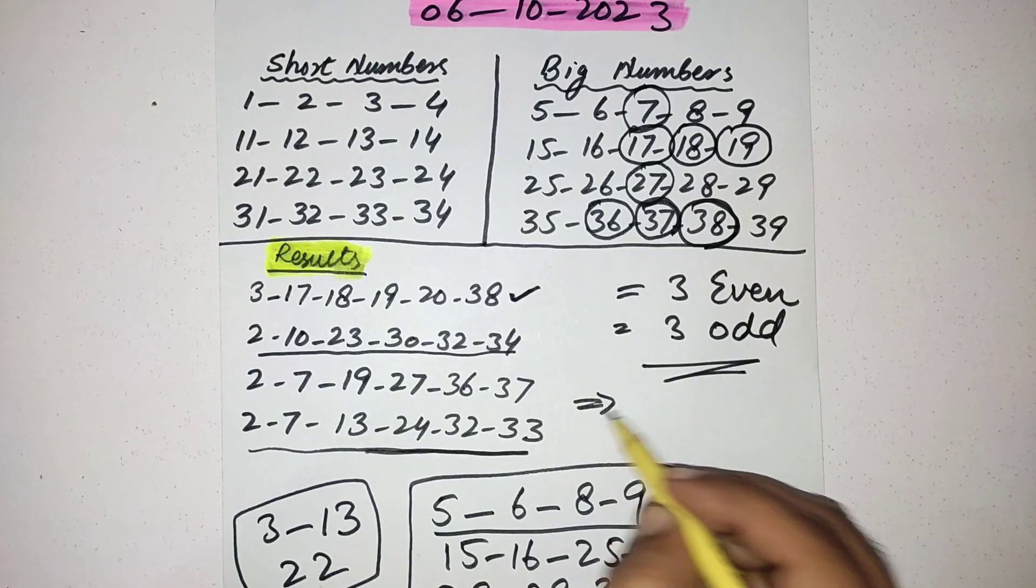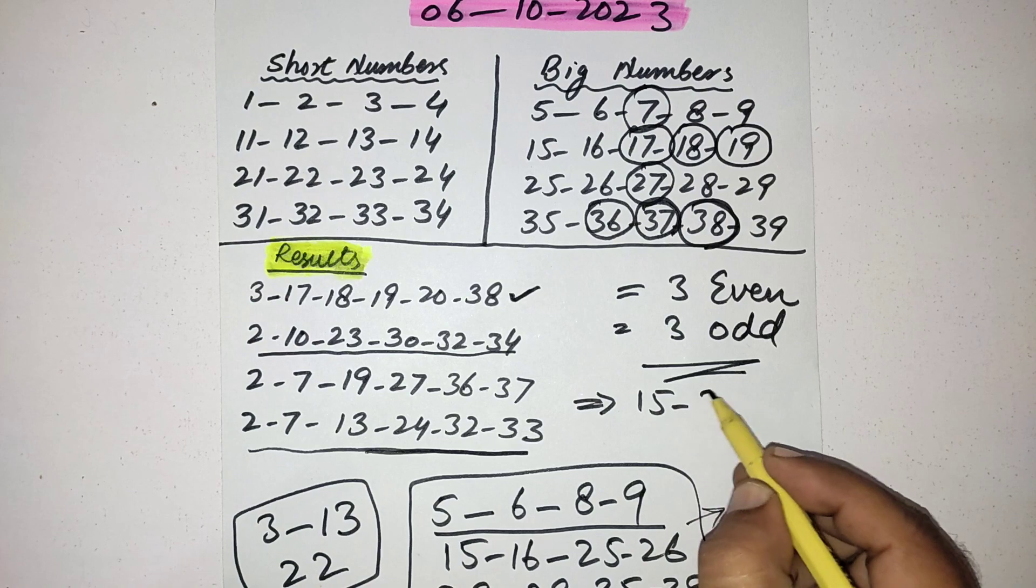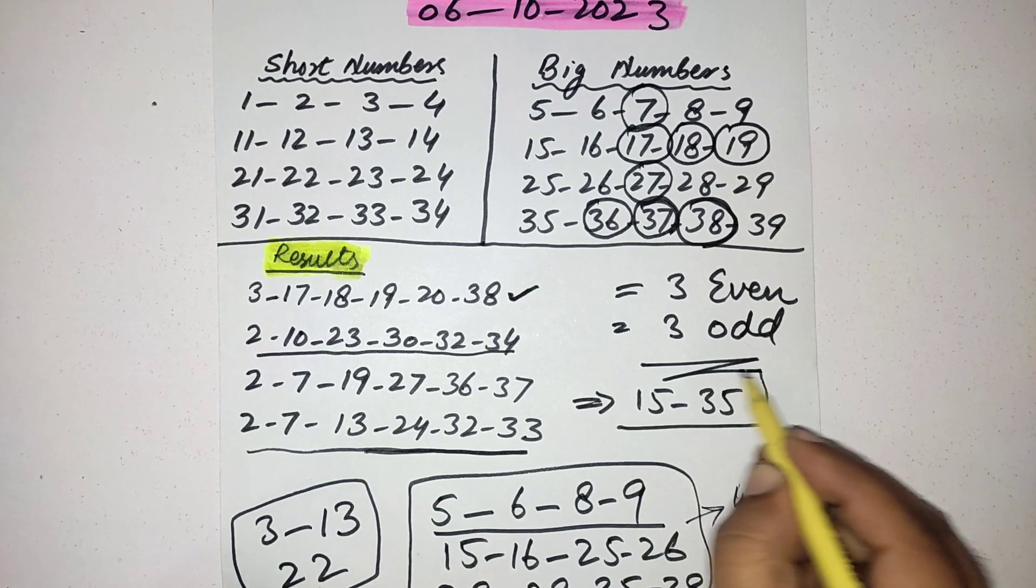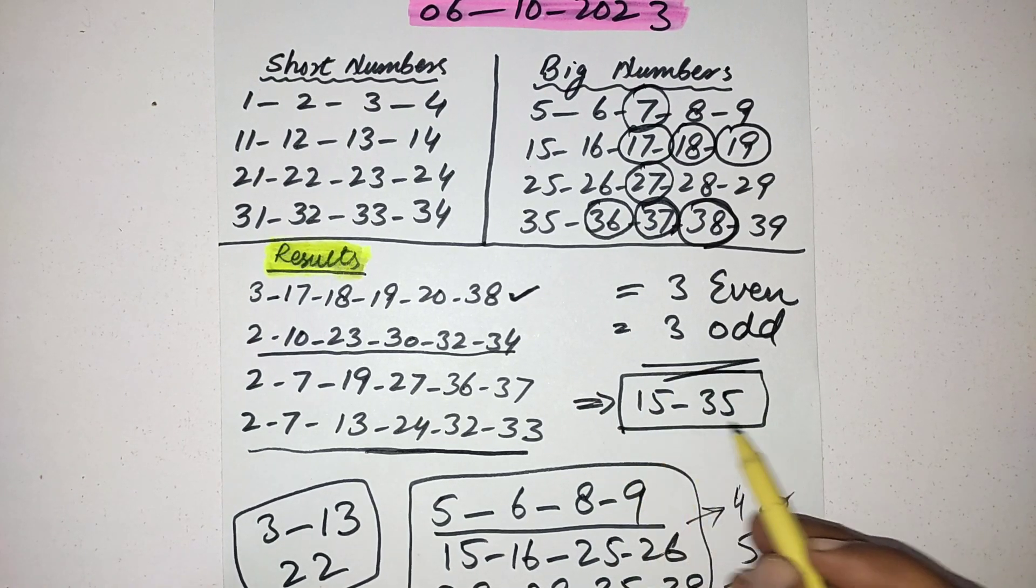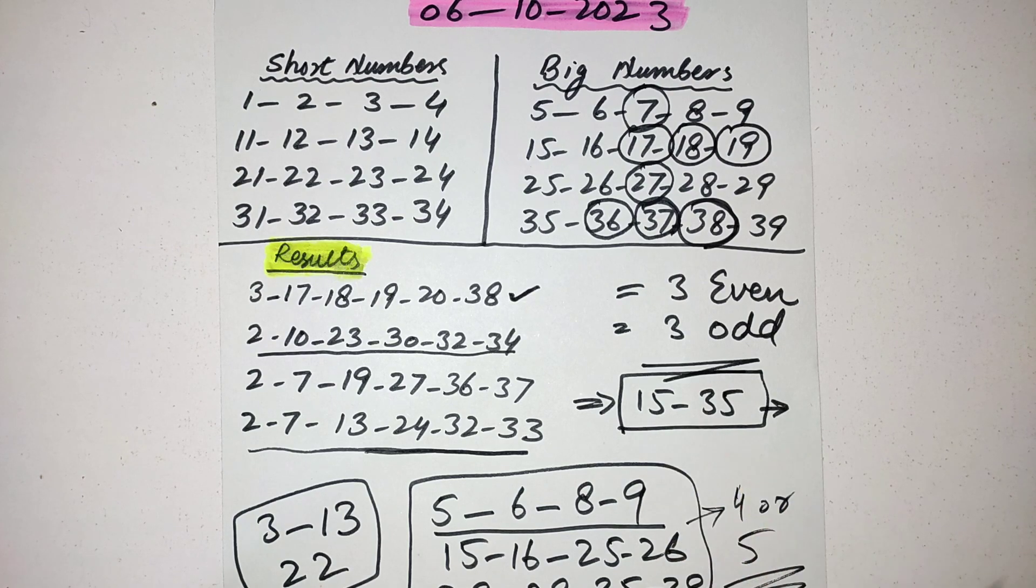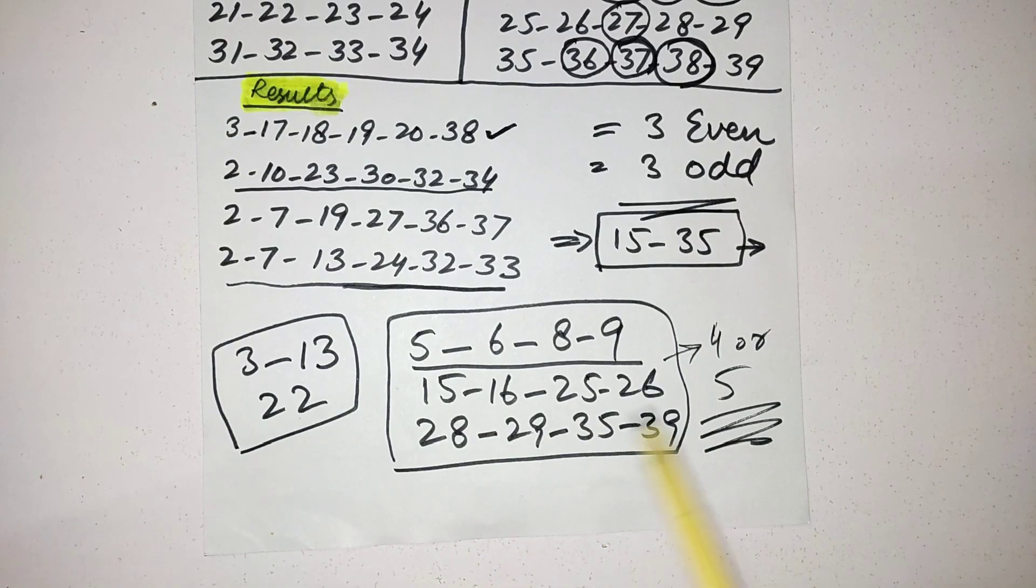Maximum numbers you should select for this draw between 15 to 35. 4 or 5 numbers you should select between these numbers 15 to 35. Okay guys, this is our prediction and these are my powerful, most powerful numbers for the upcoming draw of Easy 6.